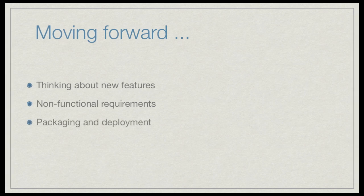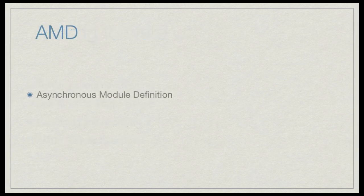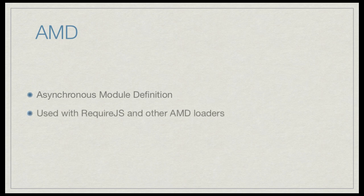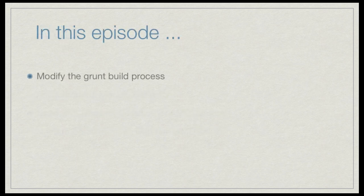I want to make sure that my plugin is compatible with AMD — the asynchronous module definition — so that it can run inside of Require.js and other AMD loaders. But I also want to make sure that I don't break the plugin for those that aren't using Require.js, which includes me. To make both scenarios work, I'm going to modify the Grunt build process to produce both a standard version of the library and an AMD-compatible version.